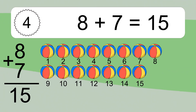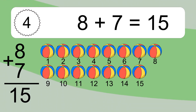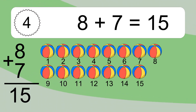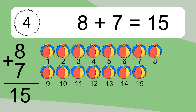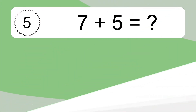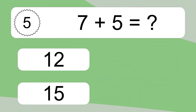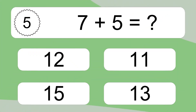8 plus 7 equals 15. Let's count it: 1, 2, 3, 4, 5, 6, 7, 8, 9, 10, 11, 12, 13, 14, 15. 7 plus 5 equals what?